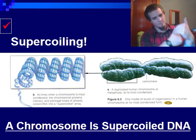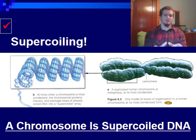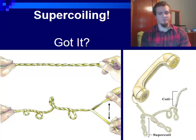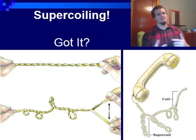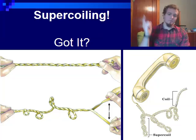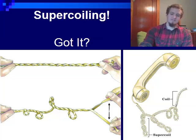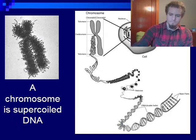Super coiling is what gives a chromosome its blurry-looking shape. If you zoomed in on a piece of a chromosome, you would see it's made of all of this super coiled DNA. Much like a phone cord — back in the day, phones had cords — the trick was they coiled the cord, so you can fit a lot more cord into a very small amount of space. Very similar to super coiling. A chromosome is nothing more than super coiled DNA.